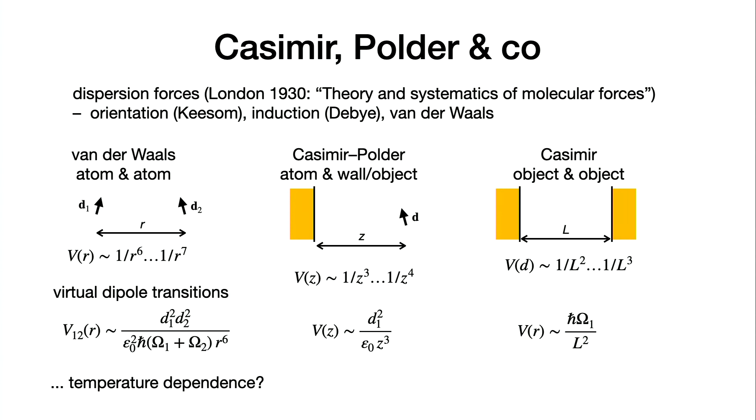The name Van der Waals is atom and atom. If you take one atom and a macroscopic object like a wall, then we are in the regime of Casimir-Polder. As a function of distance, let's call it z, you have power laws for short distances. Then if retardation comes in, retardation means finite propagation time for light, then you get the 1 over z to the 4. Casimir without anybody else is between two objects, for example two plates. Again you have different exponents depending on the regime.